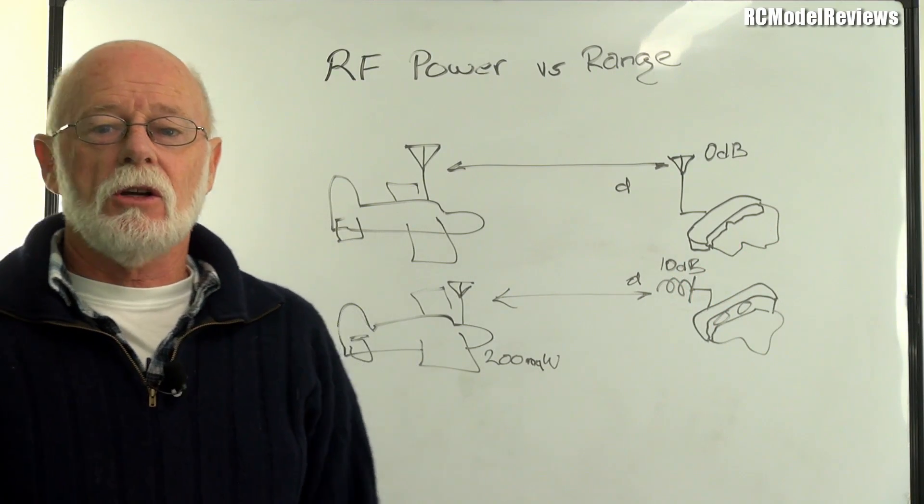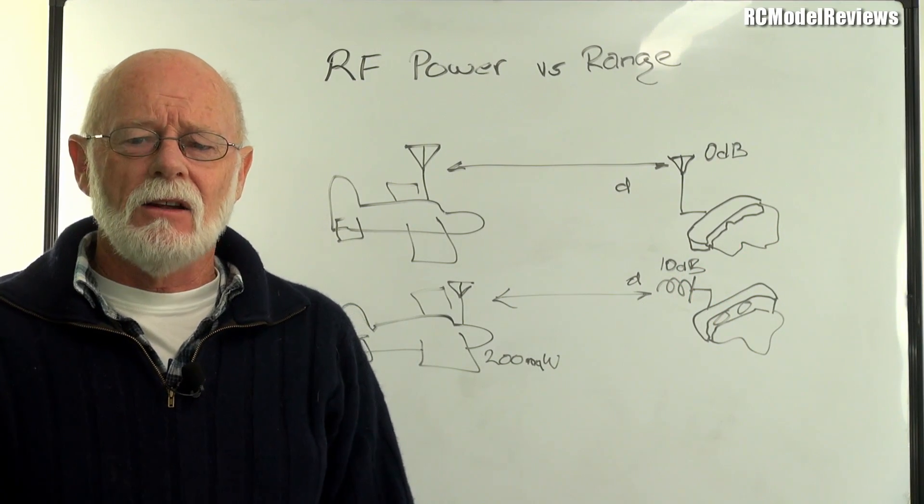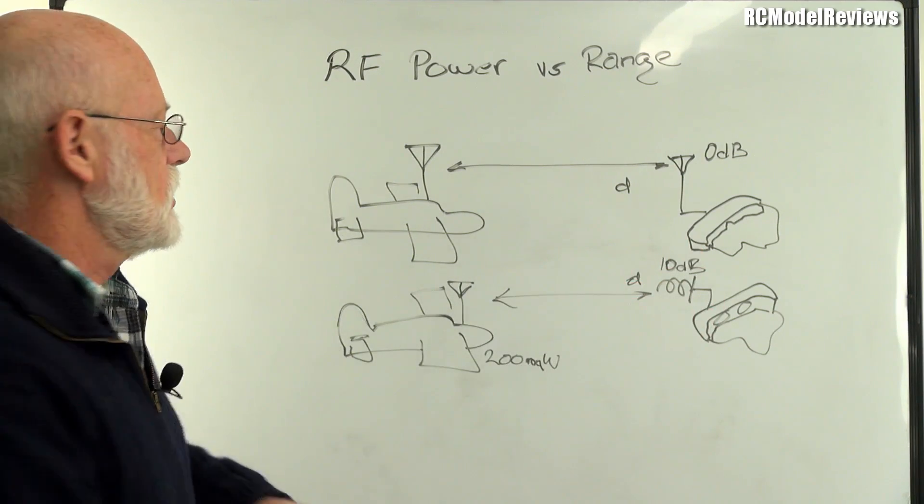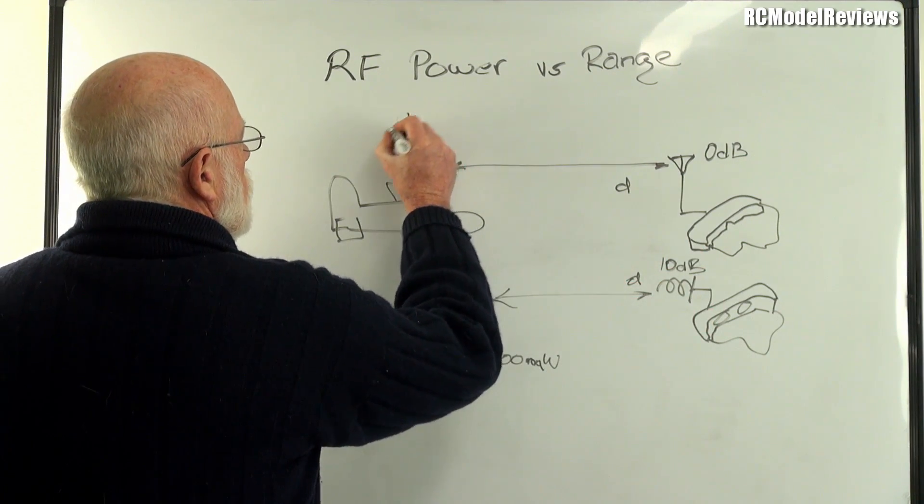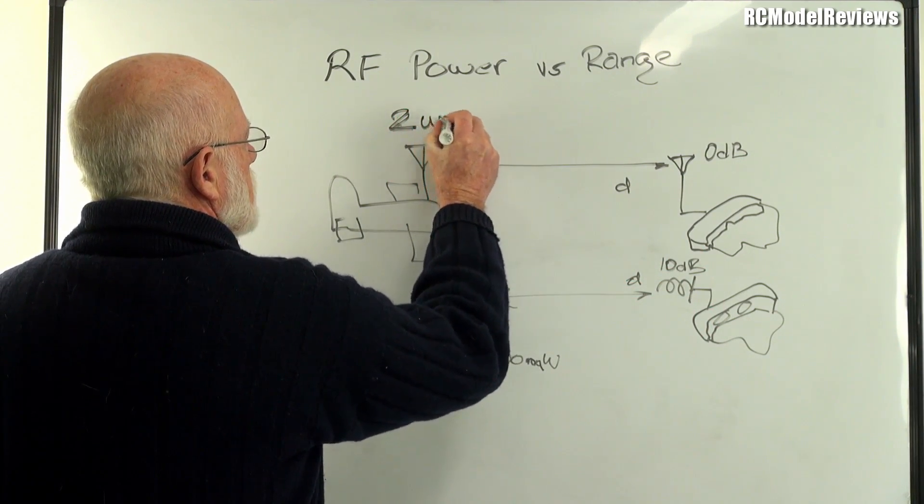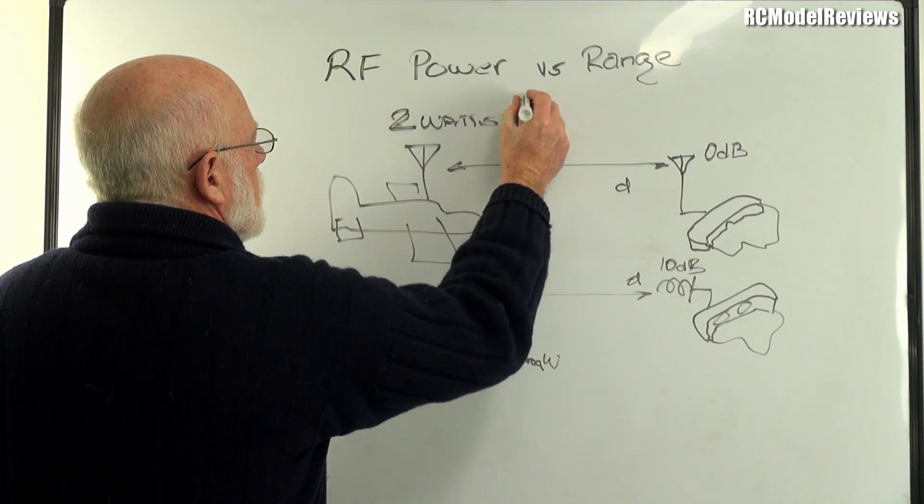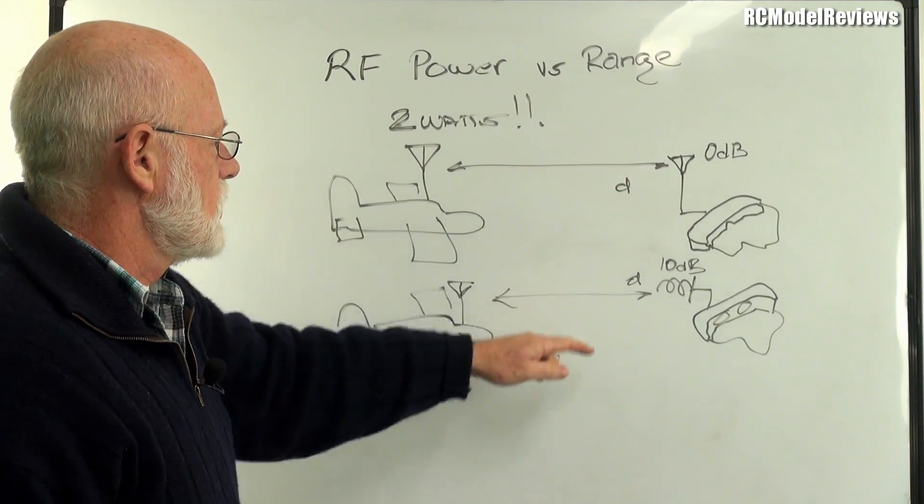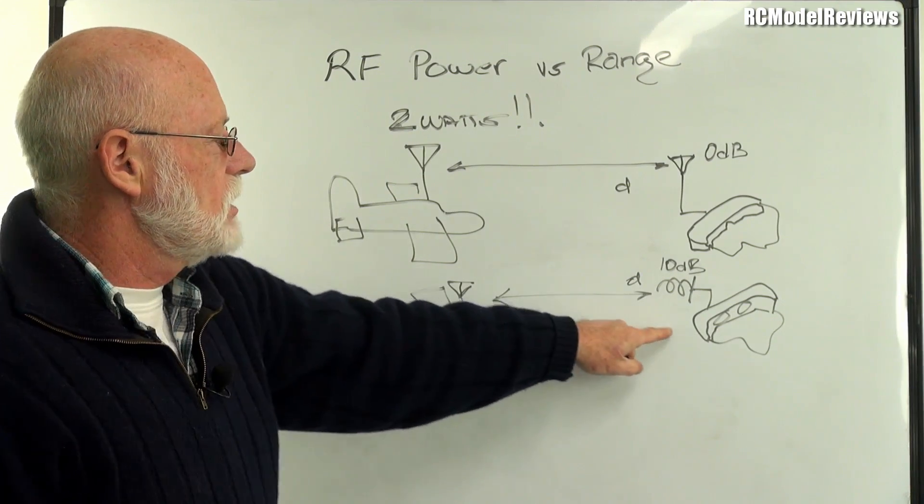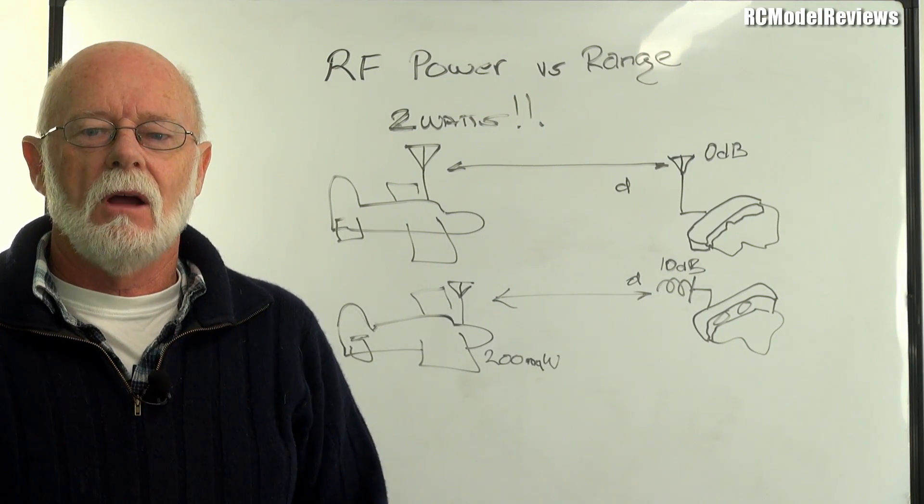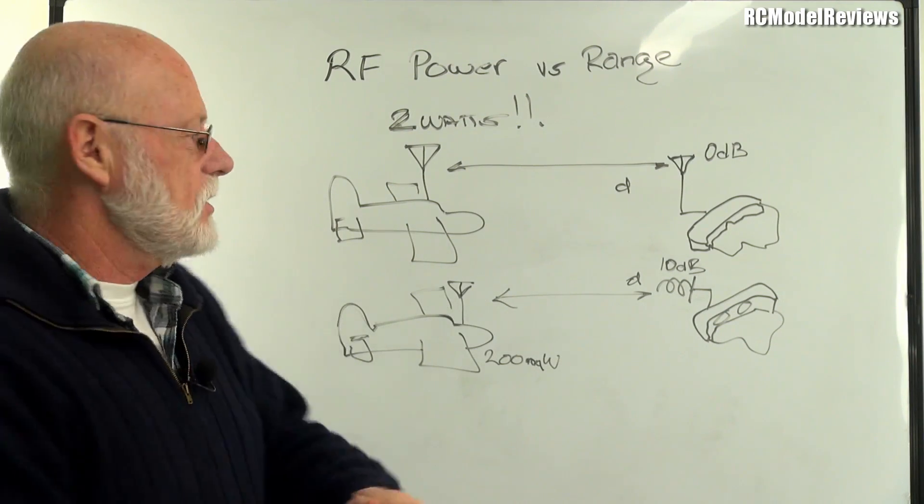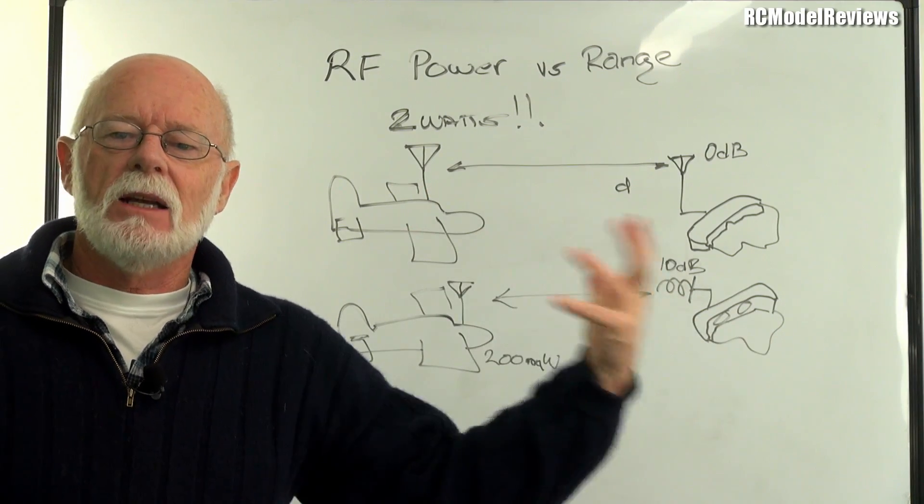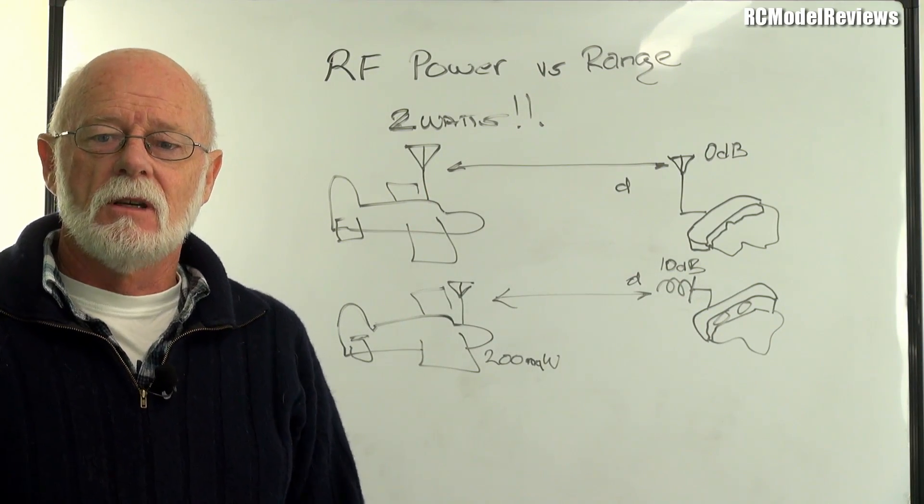Well, I'm going to tell you how much power. It's going to shock you. It's going to surprise you. So sit down, belt yourself to your chair, have a cup of tea, relax, because you would need two watts. Two watts of power to get the equivalent, the same distance as 200 milliwatts here with a 10 decibel antenna on your goggles. How's that? Well, how can that be? Because the directional antenna on your goggles effectively amplifies, magnifies the signal by 10 times.